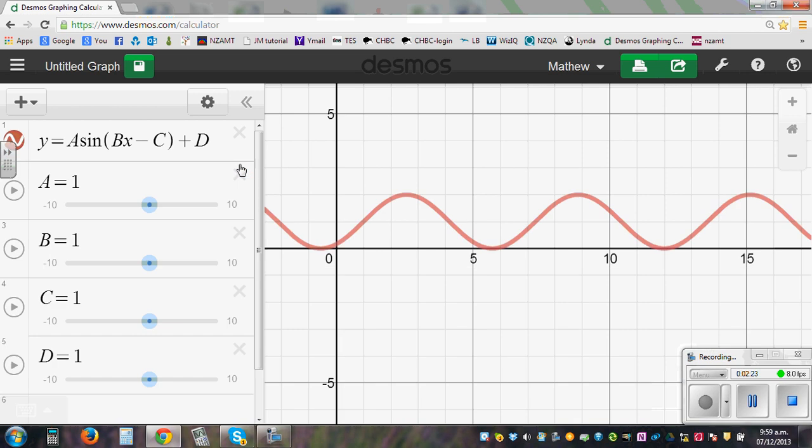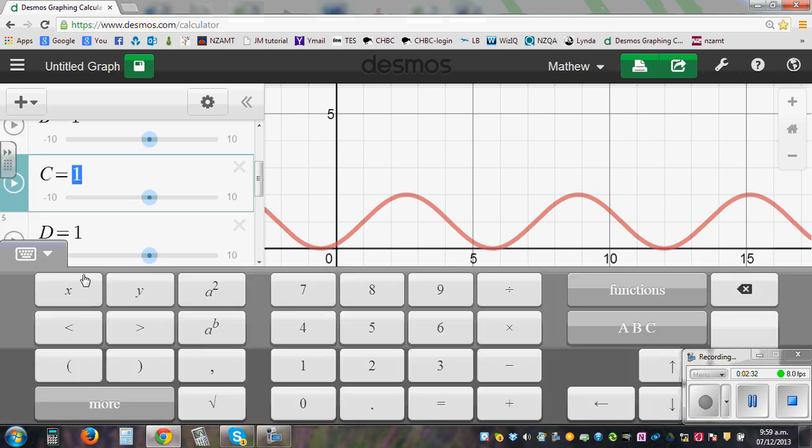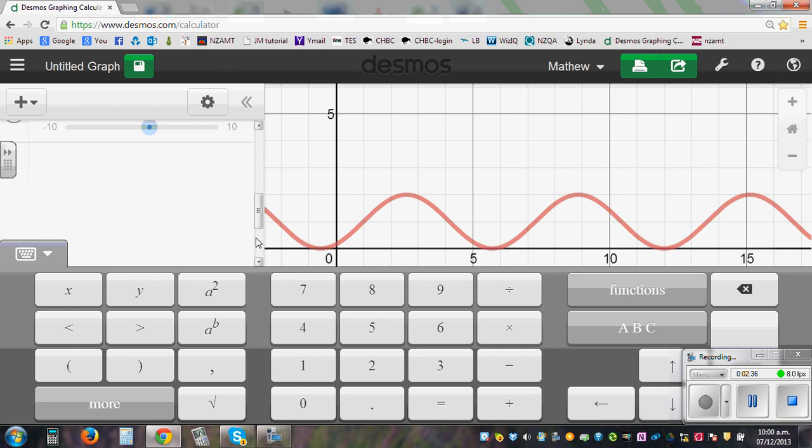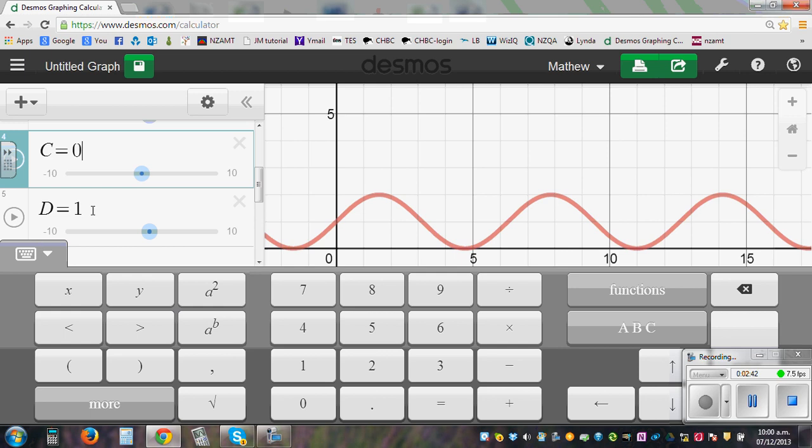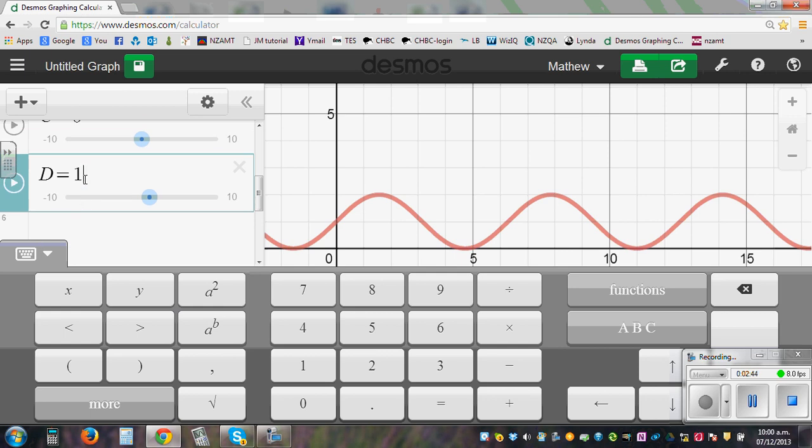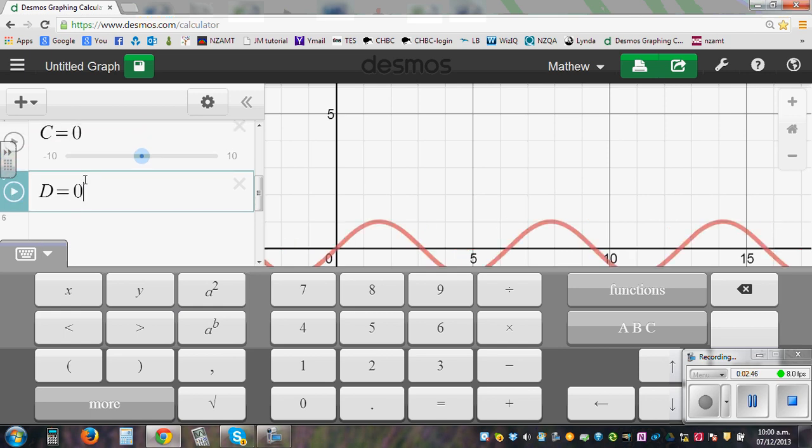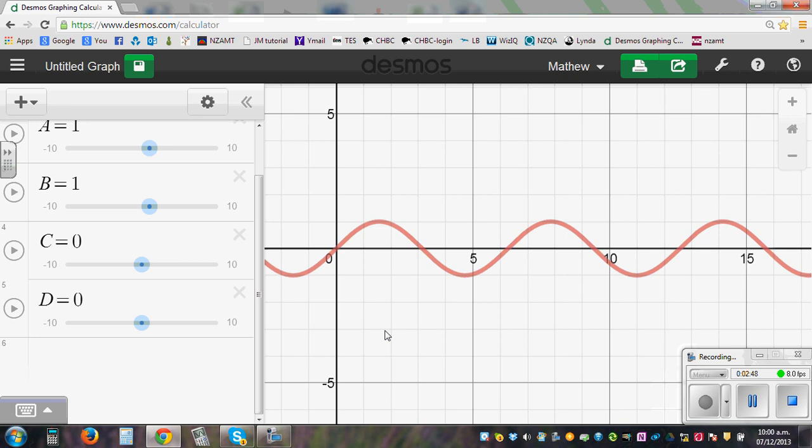So if you click on all, it will give you all the parameters. So the amplitude is 1. The period is 1. So let me make C 0 and D also 0. So this will be the basic sine graph.